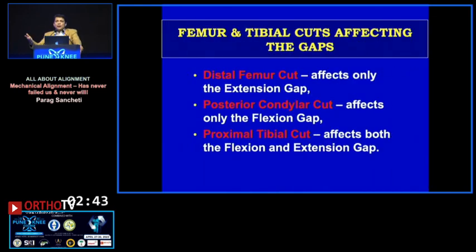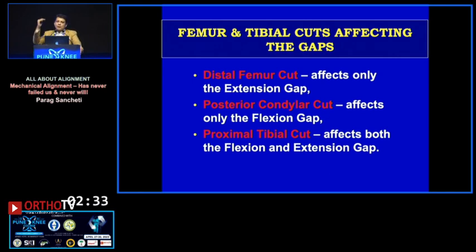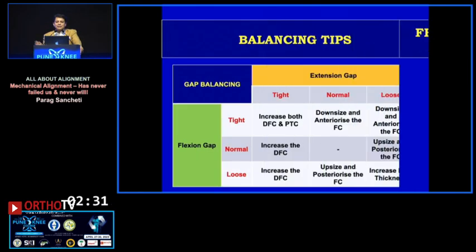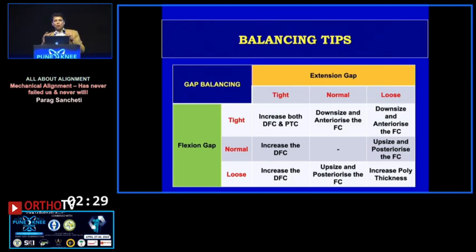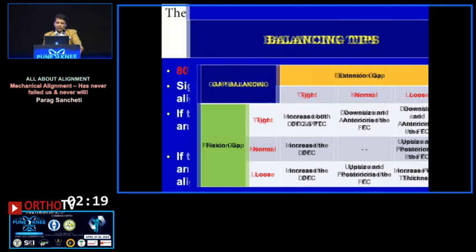It is also very easy to understand: the distal femoral cut affects only the extension gap, the posterior cut affects only the flexion gap, and if you want to alter both gaps, the proximal tibial cut does that. This is a very easy algorithm to follow when you want to balance the knee and achieve equal flexion and extension gaps.